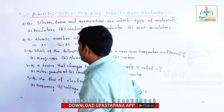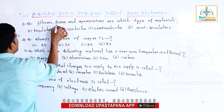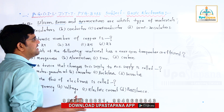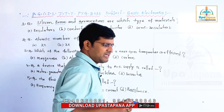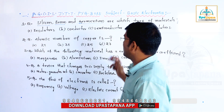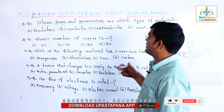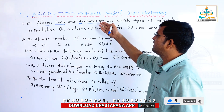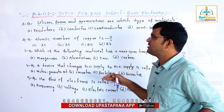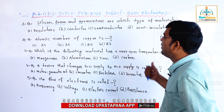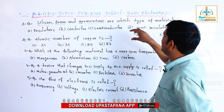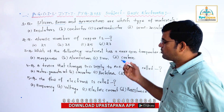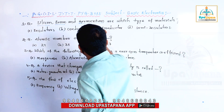First question: silicon, boron, and germanium are which type of material? Basic question. If you have silicon and germanium — germanium cut-in voltage is 0.3, silicon is 0.7. So these elements are semiconductor materials.